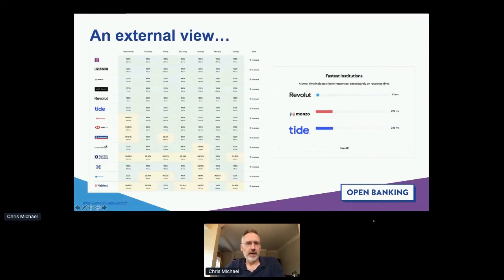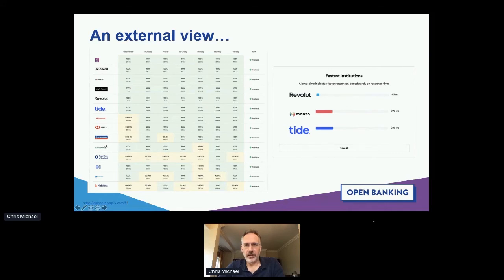Looking at other banks beyond the CMA 9, Yappily provides a useful scorecard at apiscore.yappily.com showing very significant differences in API performance and availability between banks. Challenger banks — Revolut, Monzo, Tide — show much better overall performance than some of the larger banks, with consistently near-100% availability. That's likely because these challenger banks are cloud-first with less complex legacy estates.